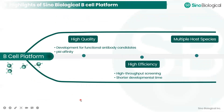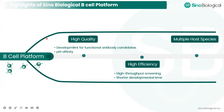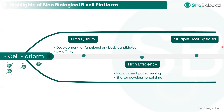In summary, Sinobiological has set up a single B cell platform to support antibody discovery. This platform helps obtain high-quality, active antibodies, and we can develop functional antibody candidates targeting therapeutic drug targets and viral antigens. Most antibodies obtained have picomolar or nanomolar to picomolar affinity. This procedure has high efficiency including high-throughput screening, and the development time is much shorter than other platforms. Currently Sinobiological is able to use this B cell platform to obtain antibodies from mice, rabbits, and human cells.